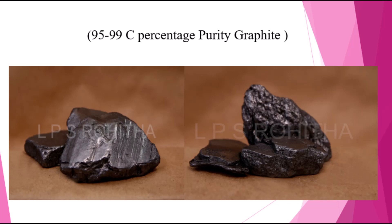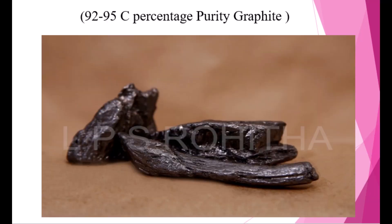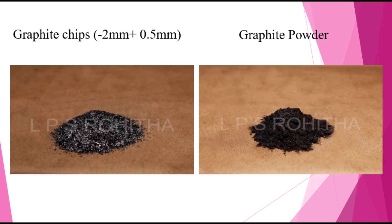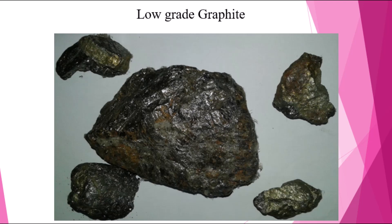In this slide we can see 92 to 95 percentage purity graphite — the impurity level is a little bit larger here. Then you can see graphite chips in sizes between 0.5 millimeter to 2 millimeter, and graphite powder as well.